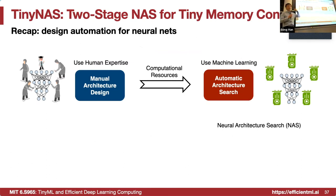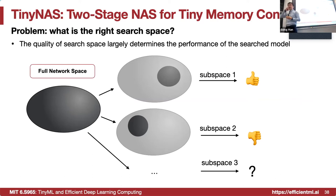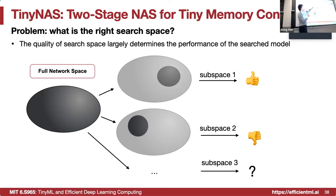Rather than using human expertise to manually design neural network architectures, we want to use computational resources for automatic architecture search. To do NAS, we need a well-defined search space — you want to narrow down the search space rather than searching across the entire forest. The quality of the search space determines the performance of the model. The first step is to narrow down from the full network search space to some sub-spaces, and we want to start with a good search space.